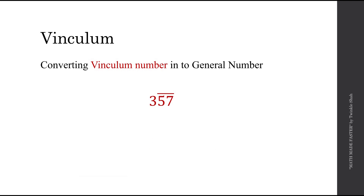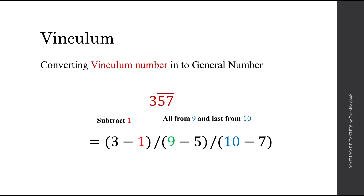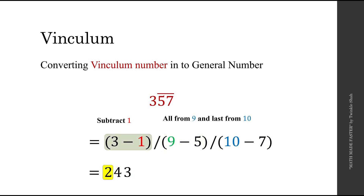Let's do another example: 3 5̄ 7̄. Recall the rule — all from 9 and last from 10. First we subtract 7 from 10, then subtract 5 from 9. Since 3 doesn't have a bar above it, we subtract 1 from 3, giving 3 minus 1. Simplifying: 10 minus 7 equals 3, 9 minus 5 equals 4, and 3 minus 1 equals 2. And that's our answer.